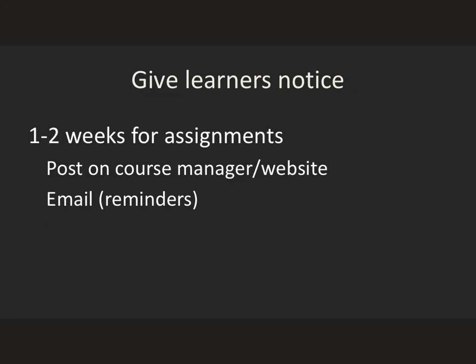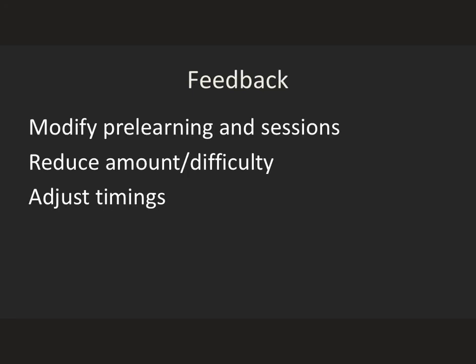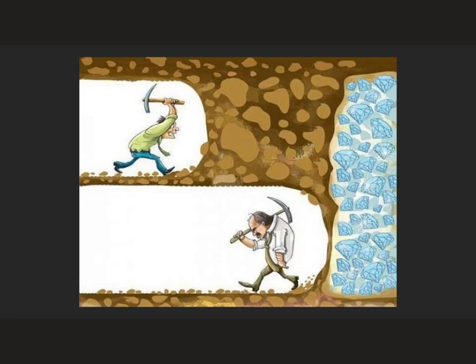Give them plenty of heads up when this is due. You can post on the course manager, you can email them, but also email a reminder a couple of days before, which is when most of them will do it. Then give feedback about your sessions and modify them according to how it went — you may need to reduce the amount, reduce the difficulty, or adjust the timings. But don't give up if the first one doesn't go quite to plan. This is a really good technique, they're fun to do, your learners will like it, so keep persevering until you get it right.